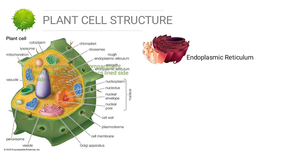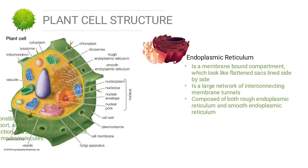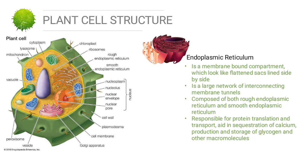Endoplasmic reticulum is a membrane-bound compartment which looks like flattened sacs lying side by side. It is a large network of interconnecting membrane tunnels, composed of both rough endoplasmic reticulum and smooth endoplasmic reticulum. Its main function is protein translation and transport, aid in sequestration of calcium, and production and storage of glycogen and other macromolecules.